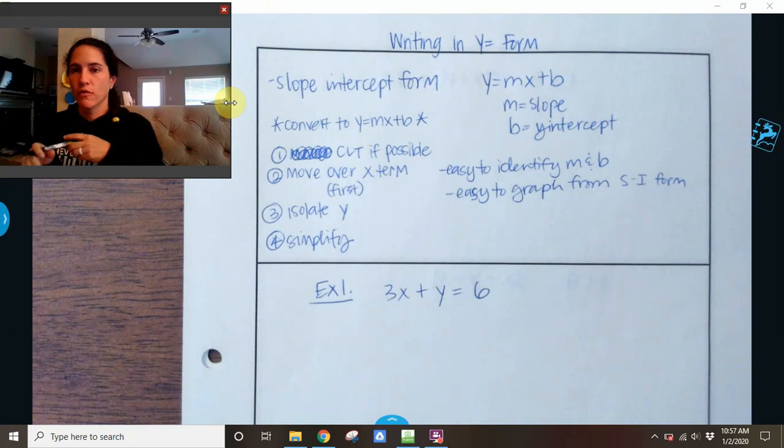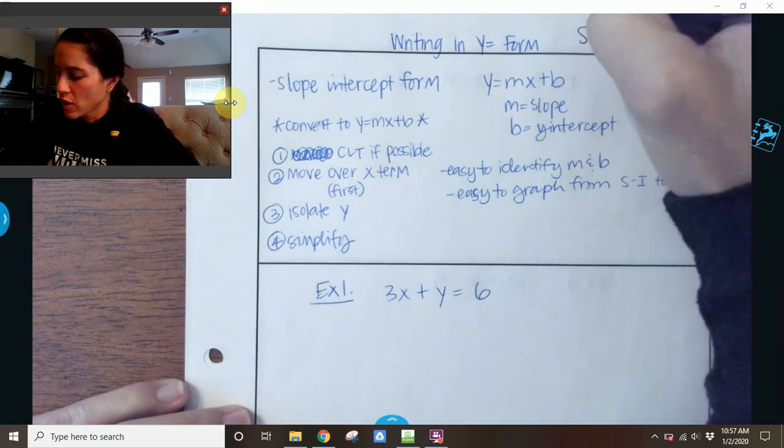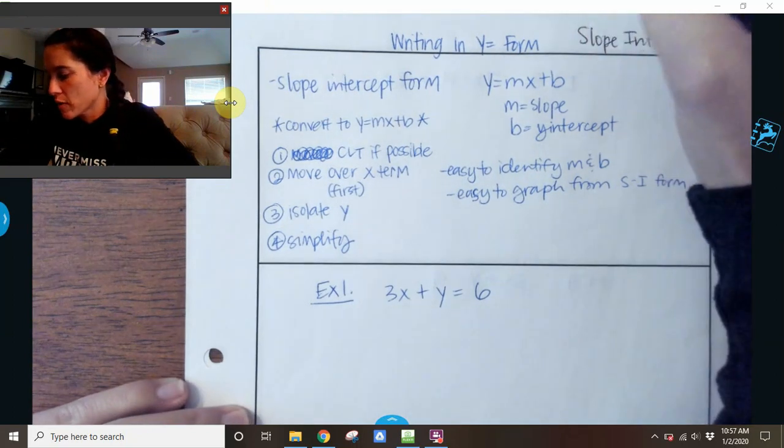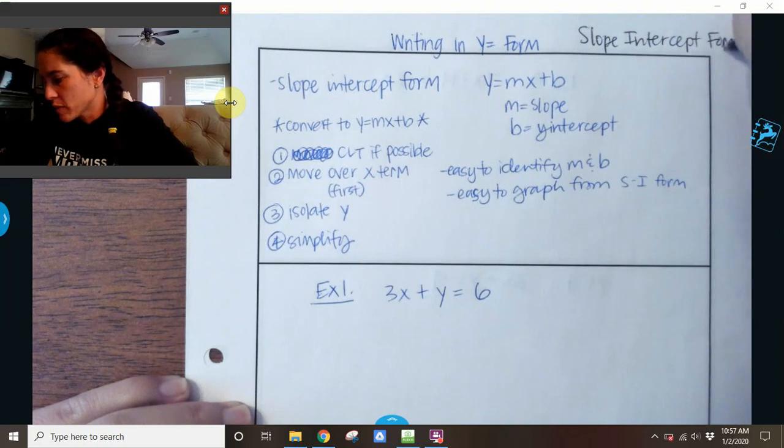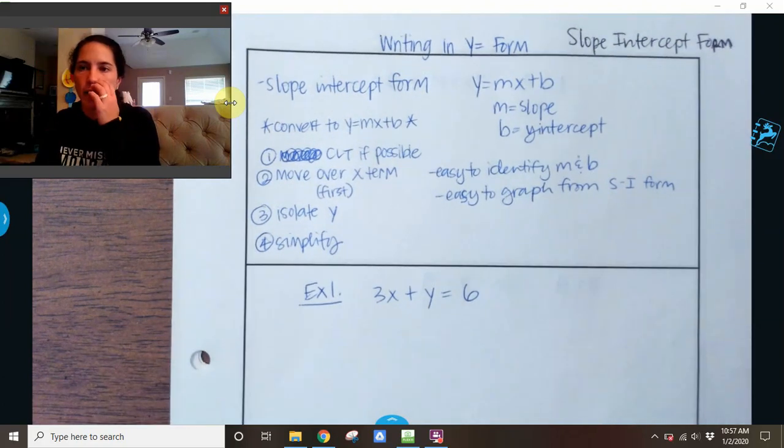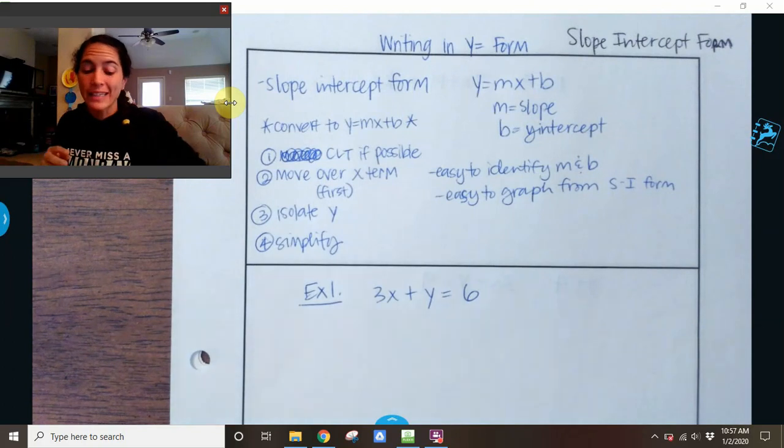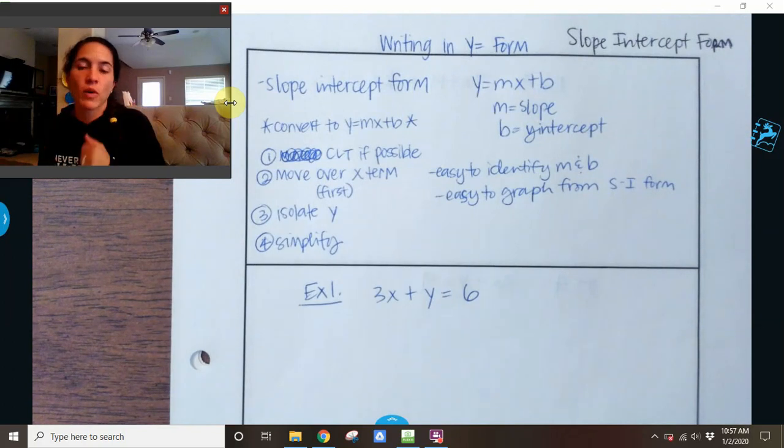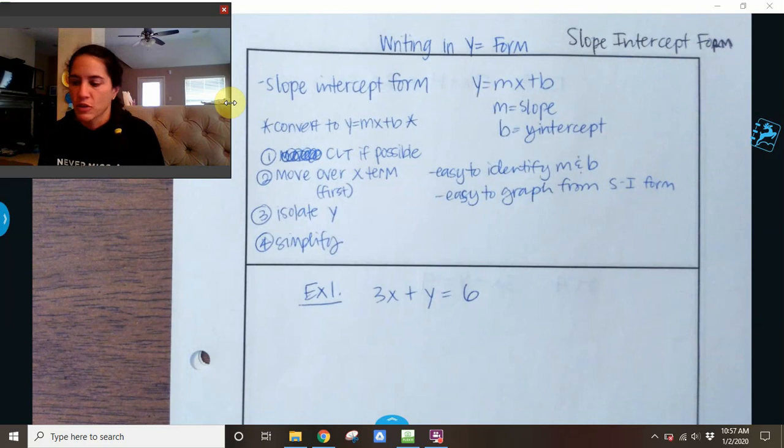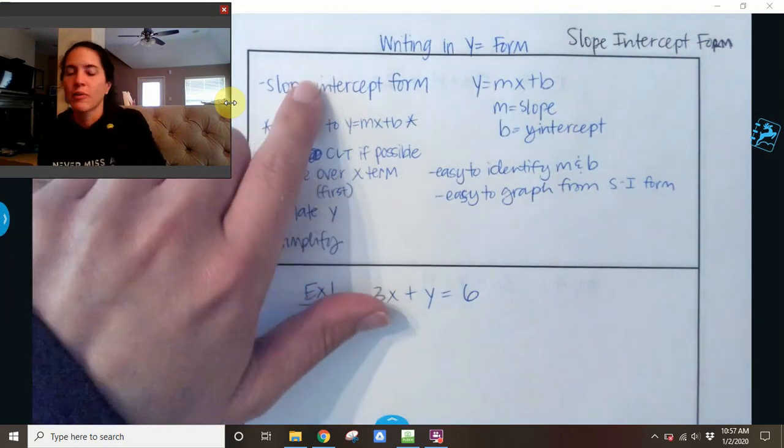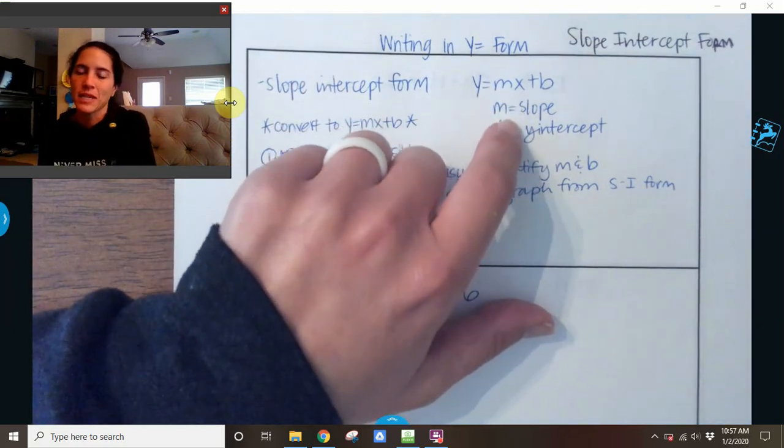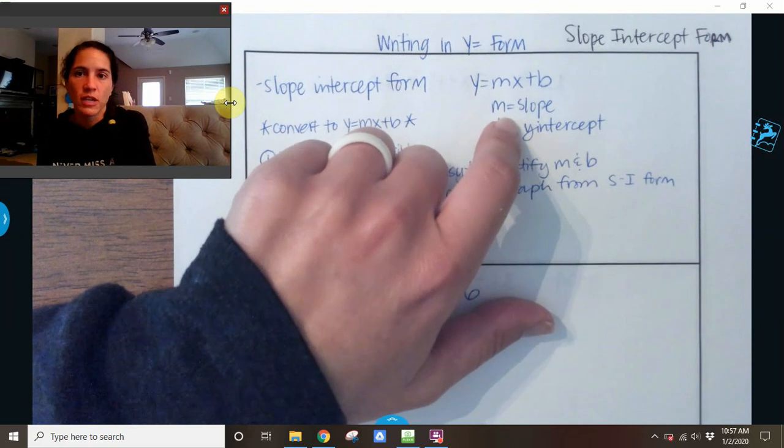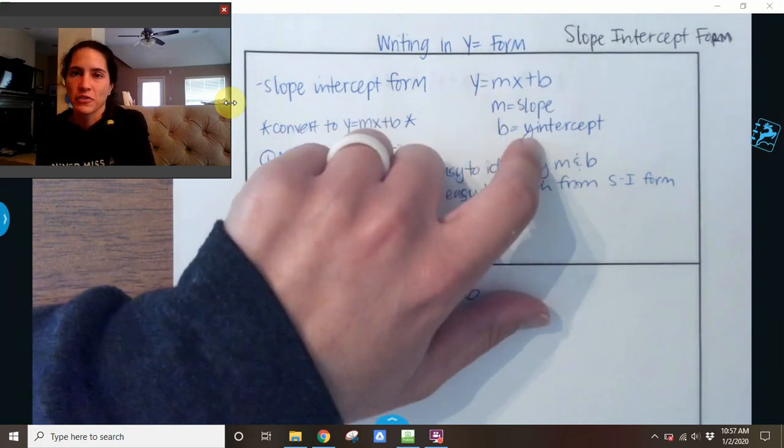Y equals in equation form is called slope intercept form. It's very popular, widely used, and will probably be one of your favorite forms once you get used to it. I already wrote it here. Slope intercept form looks like this: Y equals mx plus b. M is the slope of the equation, and b is the y-intercept.